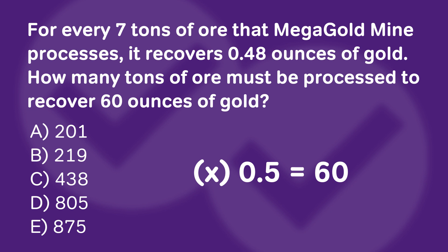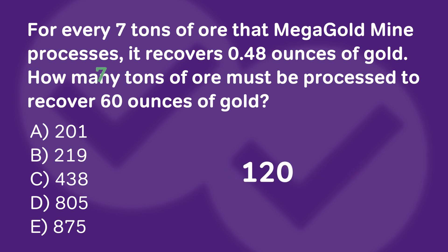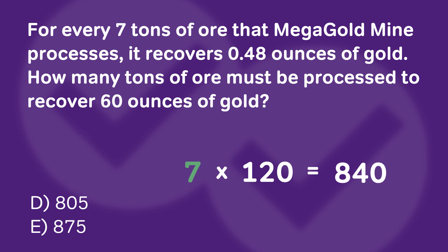So what number times one half is going to get you to 60? The answer is 120. Think of it this way: what number times one gets you to 60? Well, 60. But one half is half of one, so you want to double 60, giving you 120. Now all we have to do is multiply 7 times 120, which is the same as 12 times 7, which is 84 — add the zero and we have 840. That gets rid of answers A, B, and C.